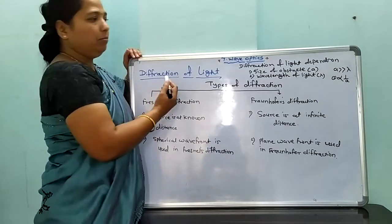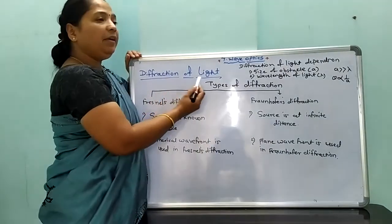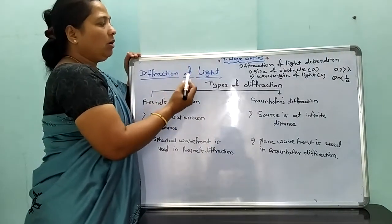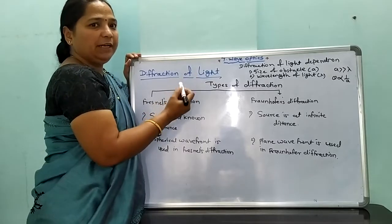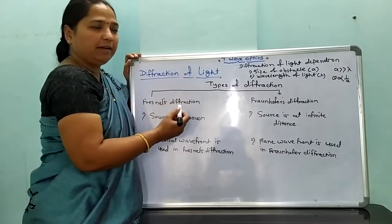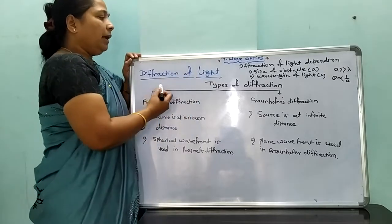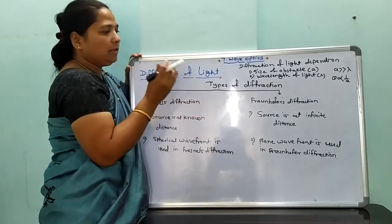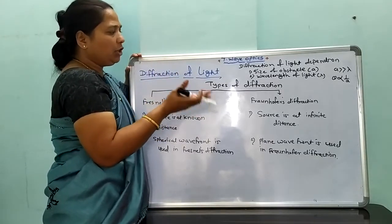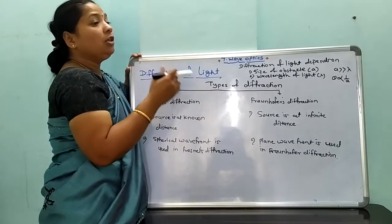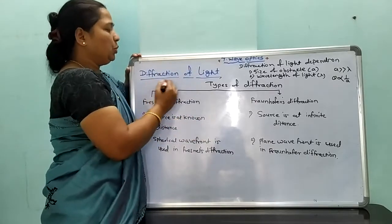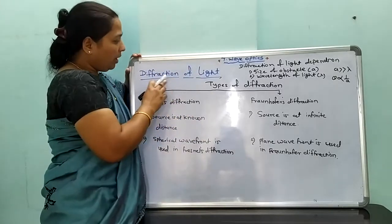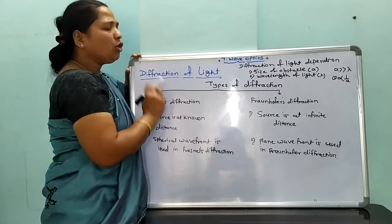Diffraction of light means the bending of light due to the corners or edges of a slit or obstacle. The light then spreads into a region in the geometrical shadow, which is known as diffraction of light.